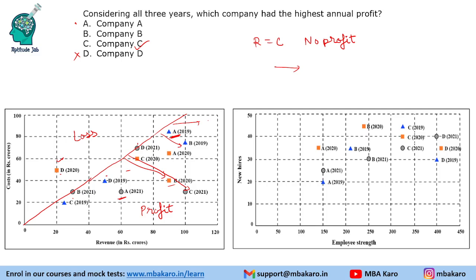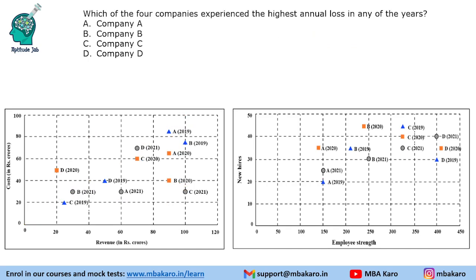C has the highest value from the graph. For the next question — which of the four companies experienced the highest annual loss in any of the years — we can easily say that D has the highest loss.